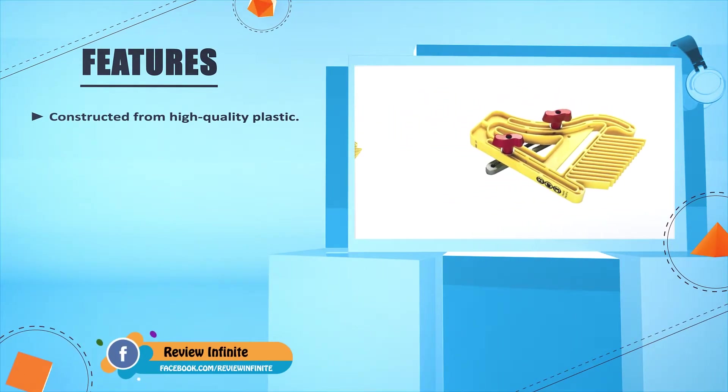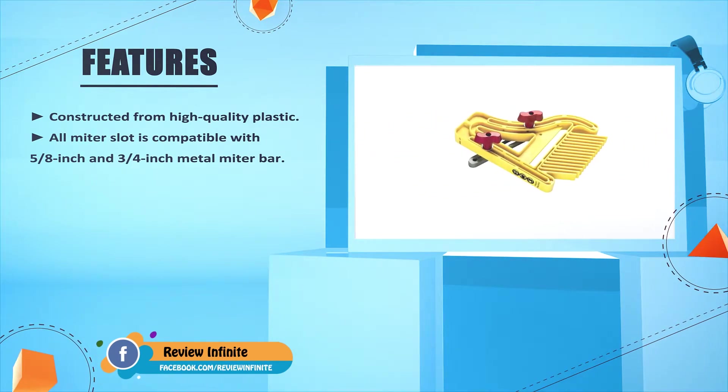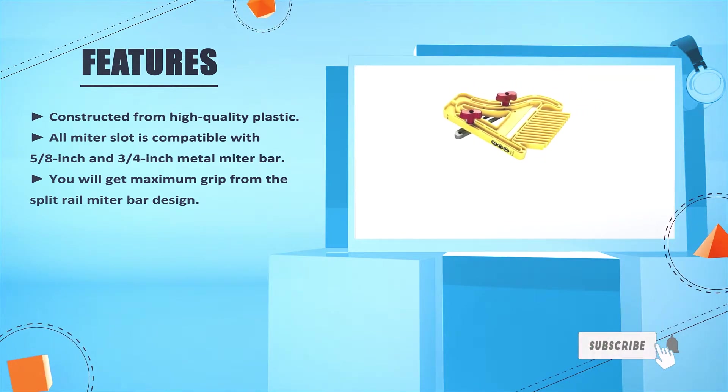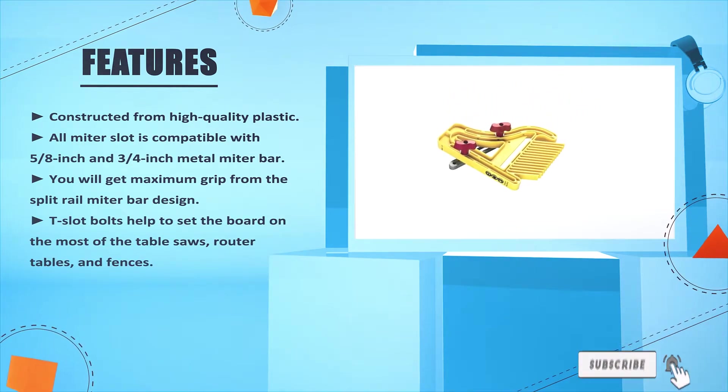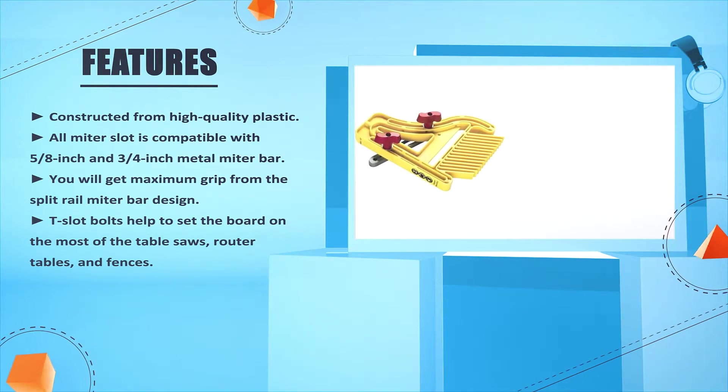Constructed from high-quality plastic. All miter slots are compatible with five-eighths and three-quarter inches metal miter bar. You will get maximum grip from the split rail miter bar design. Slot bolts help to set the board on most table saws, router tables, and fences.